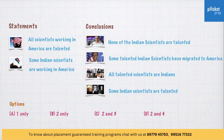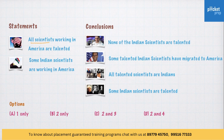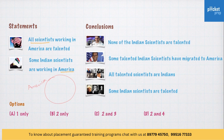Let's try one more. Here we have two statements. First: 'All scientists working in America are talented.' Second: 'Some Indian scientists are working in America.' For better understanding, let me draw the Venn diagram. America contains all talented scientists. Some Indians are also working in America, so there is a set of Indians who are also talented.